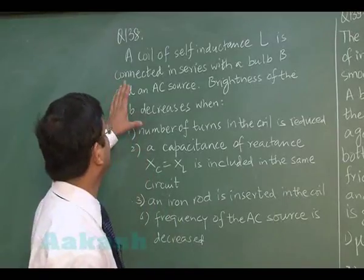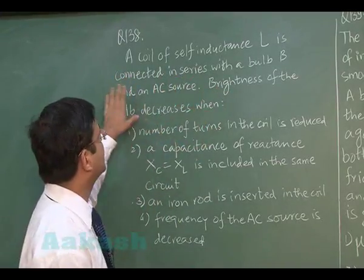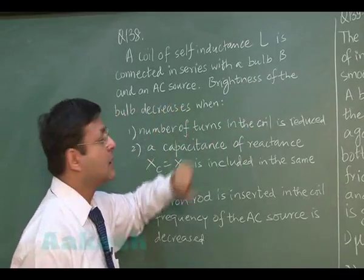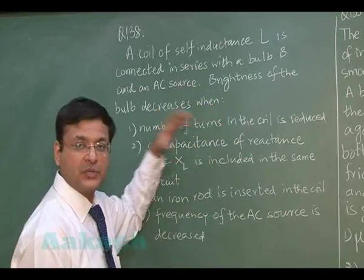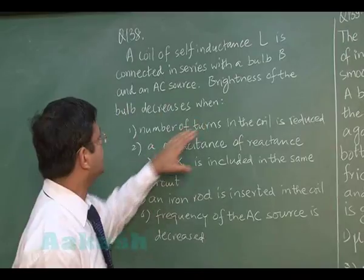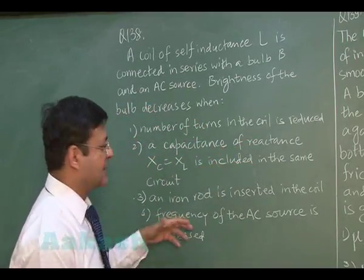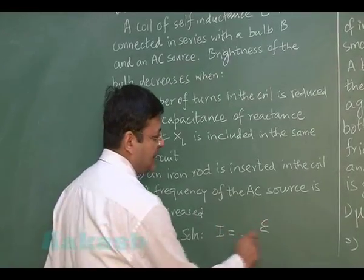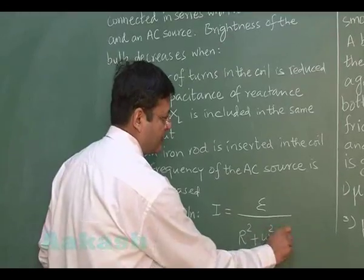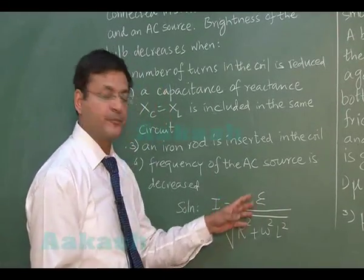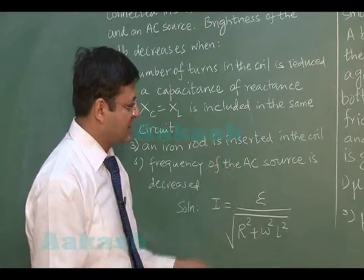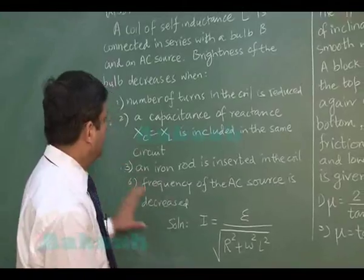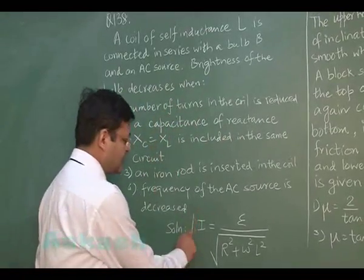Question 138: a coil of self-inductance L is connected in series with a bulb B — treated as resistance — and an AC source. The brightness of the bulb decreases when the number of turns in the coil is reduced. The current in the circuit is governed by the expression involving the AC voltage, resistance of the bulb, frequency applied, and the inductance of the coil.